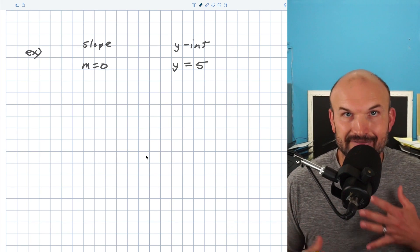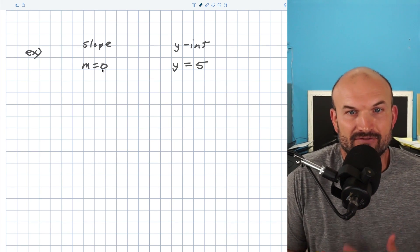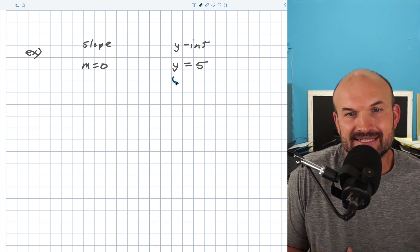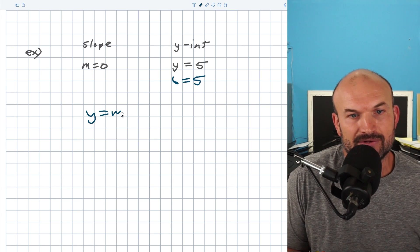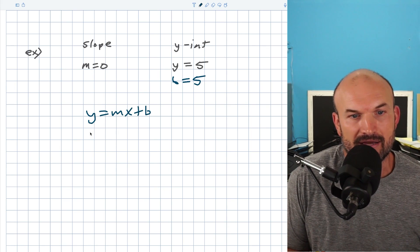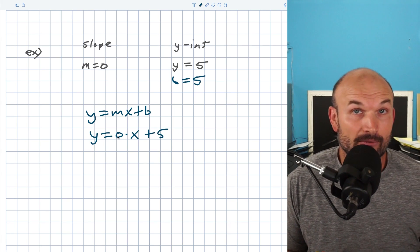Okay, so hopefully you're in kind of a little bit of a groove now. And you kind of realize, all right, it's really just simply as plugging in your values, our m and our b. And again, in this example, you can just replace y equals 5 with b equals 5, right? And so you have your y equals mx plus b. And you say, all right, that's y equals 0 times x plus 5.